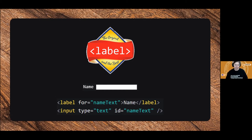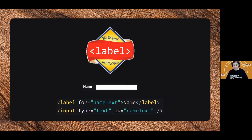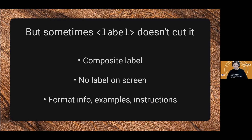The HTML label element is the original and the best way to label a text field. Just make sure that you use the for attribute to link that label to its text field in code, so that a screen reader doesn't have to guess, or worse, just leave it sitting there unlabeled. So do please use a label if you can possibly get away with it. However, I do admit that sometimes label isn't good enough.